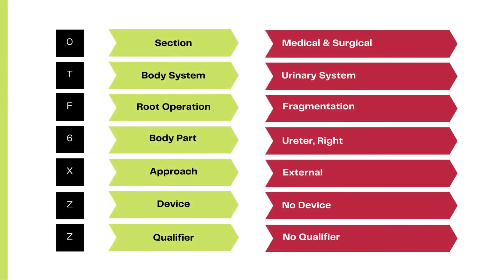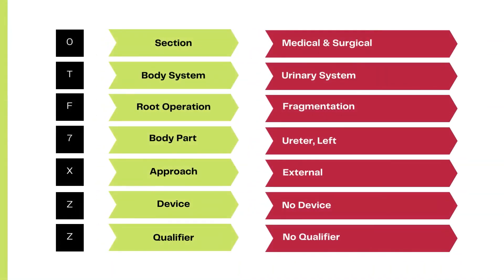The code for the ESWL of the right ureteral stone is 0TF6XZZ. The code for the ESWL of the left ureteral stone is 0TF7XZZ. Essentially the same code, but the only character that changes is the body part value — the fourth character.